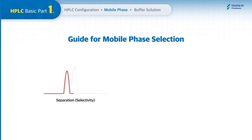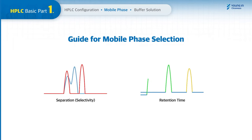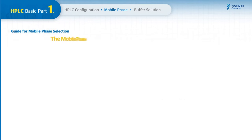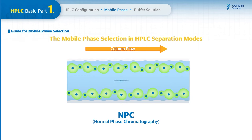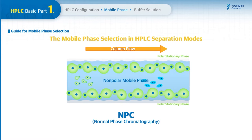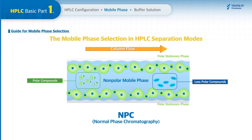Mobile phase selection differs by HPLC separation mode. In normal phase chromatography, a nonpolar mobile phase and a polar stationary phase are used, so nonpolar compounds elute first from the HPLC column, then polar compounds in order.